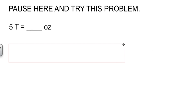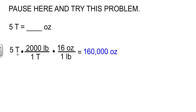So you have 5 tons, and you want to go to ounces. We don't have a direct conversion, so we have to turn our 5 tons into pounds first, and then turn our pounds into ounces. Ton cancels ton, pound cancels pound. 5 times 2,000 times 16, and you get 160,000 ounces.